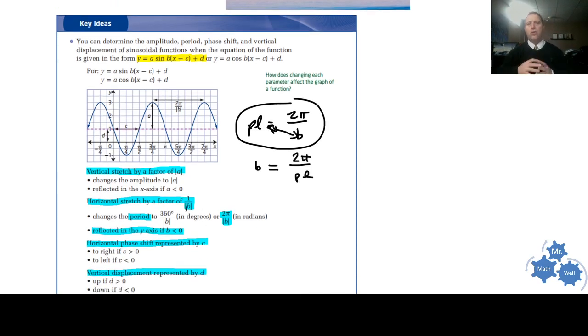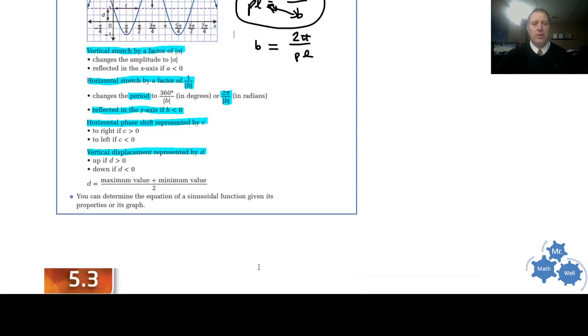Remember, if b is greater than 1, that means that the period length is smaller than normal. So if this is 2π, if b was 2, then you would have half. It would be half. And if b was less than 1 between 0 and 1, then you've got a stretch. So that's just an important thing to remember.